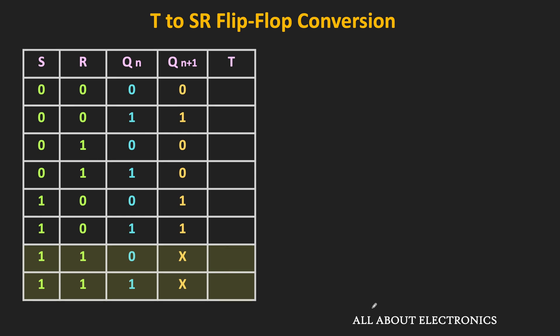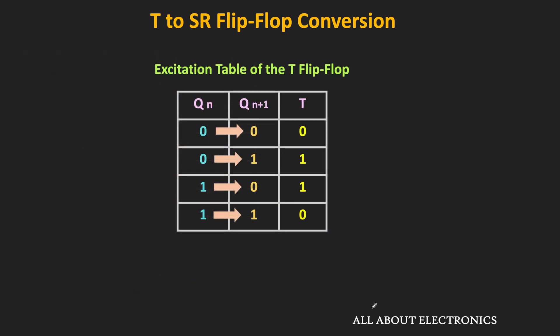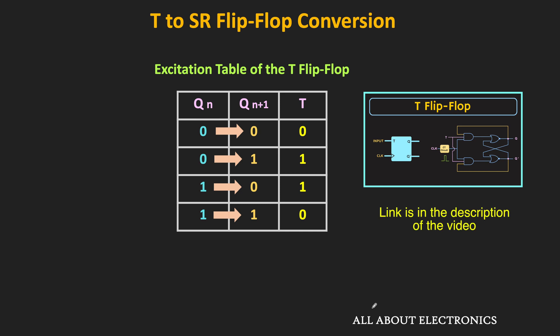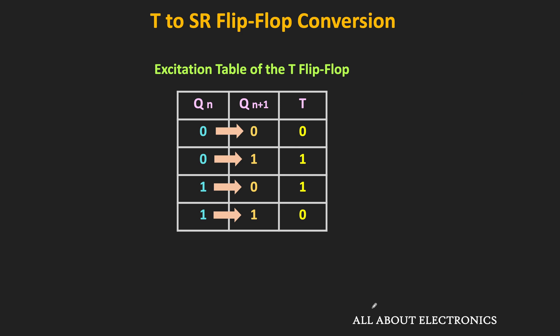For the last two input conditions, it doesn't matter what the value of the T input is — the T input is a don't care term. But for the remaining six output transitions, let us find what the value of the T input should be. To find that, we will take the help of the excitation table of the T flip-flop. As discussed in the earlier video, whenever there is a 0-to-0 or 1-to-1 transition, the required value of T is 0. And whenever we have a 0-to-1 or 1-to-0 transition, the required value of T is 1.